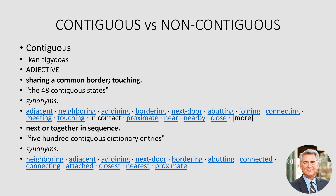Relative to contiguous, by definition we're talking about sharing a common border, and that is touching — like the 48 contiguous states. Some synonyms include adjacent, neighboring, adjoining, in contact, proximate, nearby, close. Another definition for contiguous is next, or together in sequence. Some synonyms include neighboring, adjacent, adjoining, next door, bordering. That's contiguous.